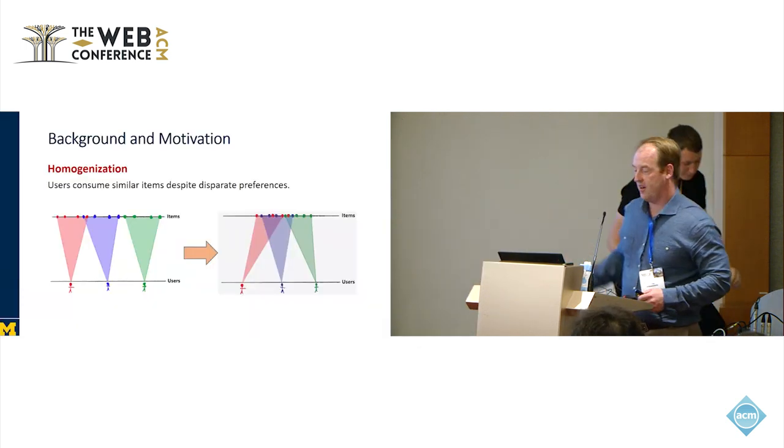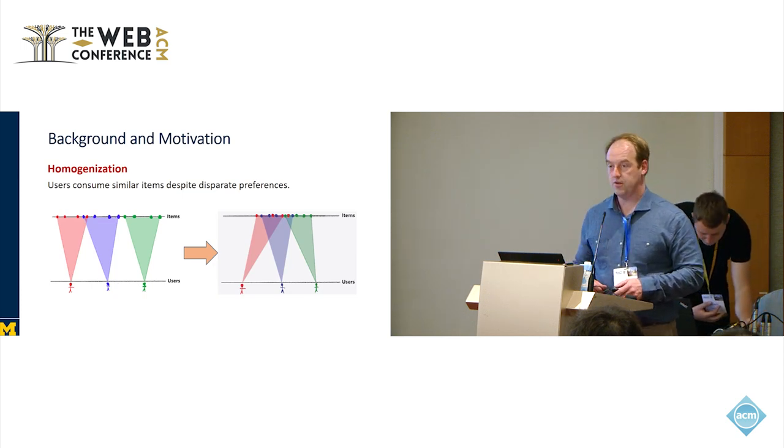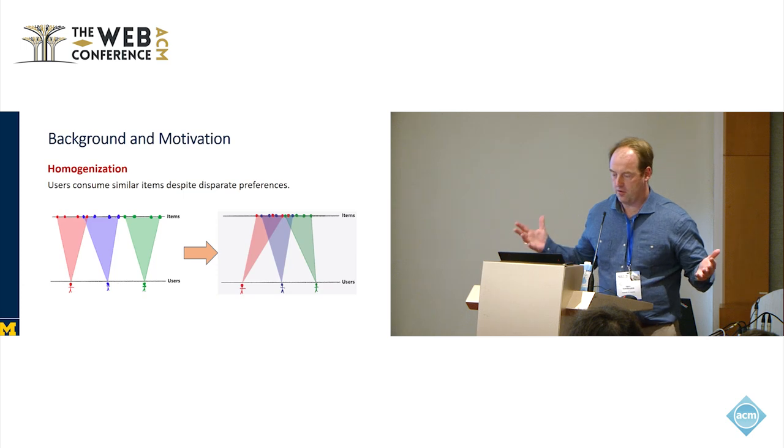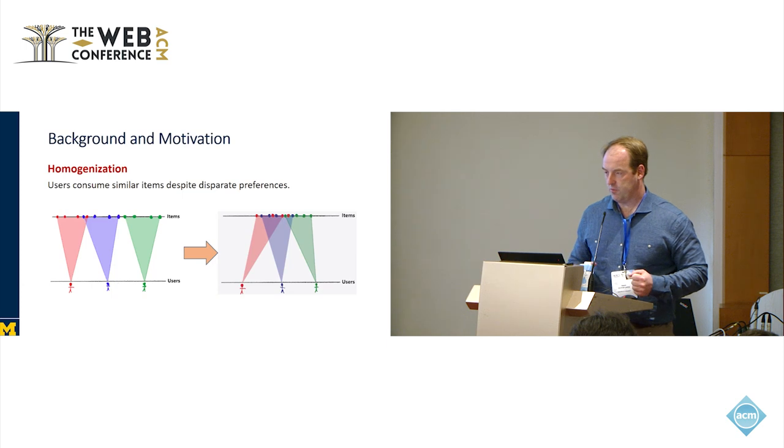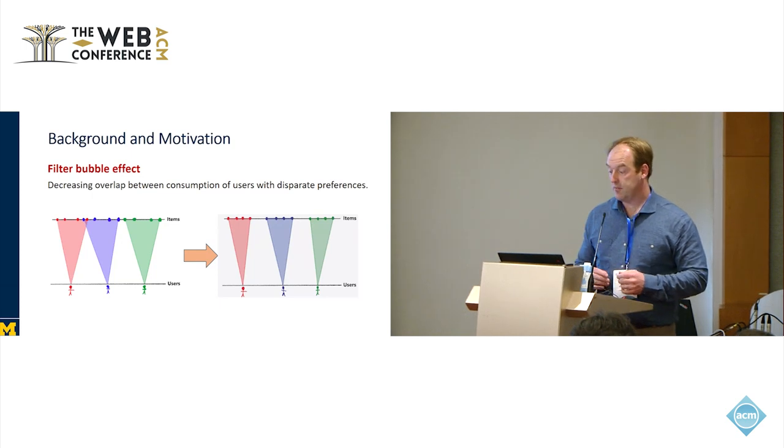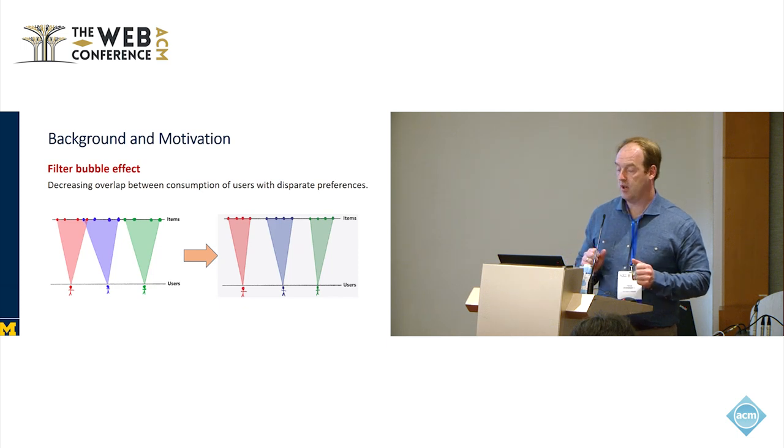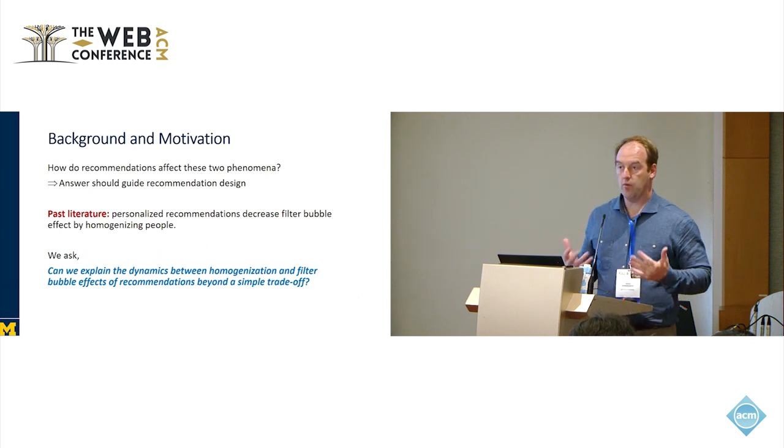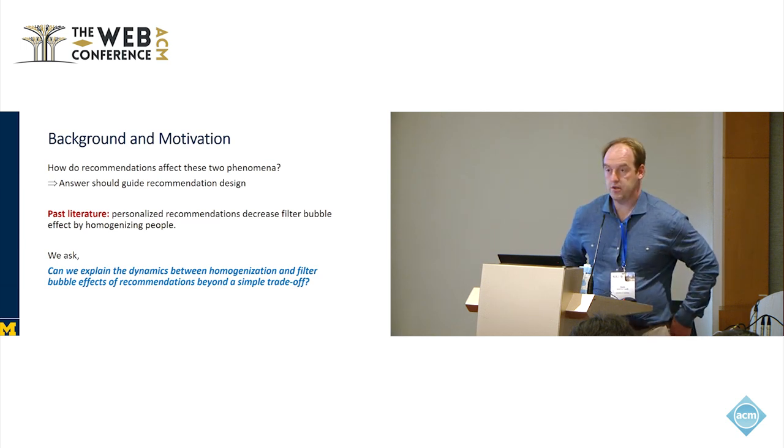We'll start with some definitions. We're looking at two main effects. One is homogenization, where consumers are consuming similar content even though they might have different preferences. The normal term for this is blockbuster, where people might have different thoughts about what a good movie is, but they all go to see the same movie. The second is a filter bubble effect, where people have different preferences but they're consuming very different content, so the content is not overlapping between different folks.